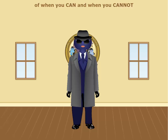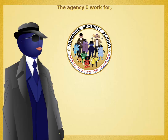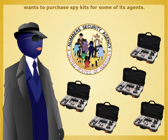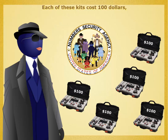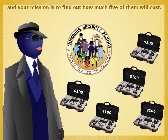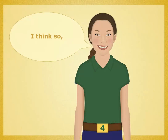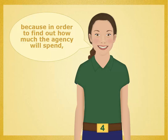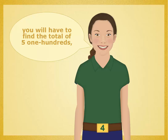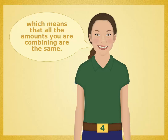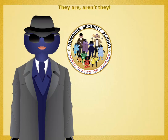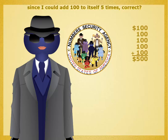Let's look at a few examples of when you can and when you cannot use a multiplication operation. The NSA — the Number Security Agency — wants to purchase spy kits for some of its agents. Each of these kits cost $100, and your mission is to find out how much 5 of them will cost. You could use multiplication because you need to find the total of five 100s — all the amounts are the same. So multiplication fits the bill in this case, as does addition, since you could add 100 to itself 5 times.